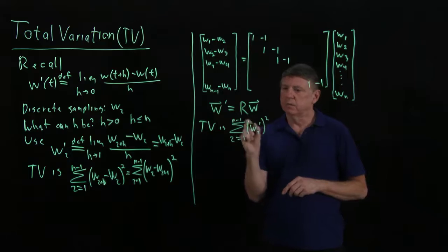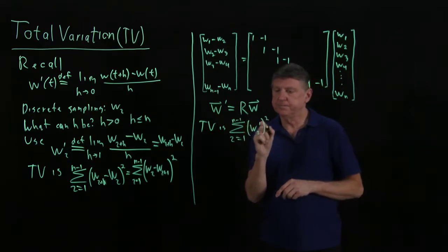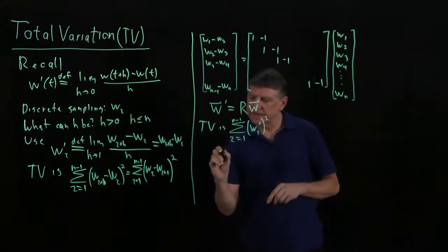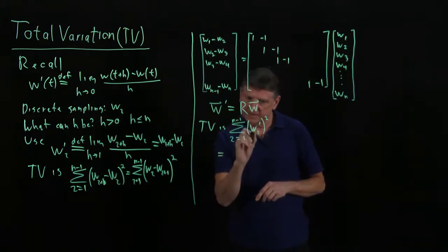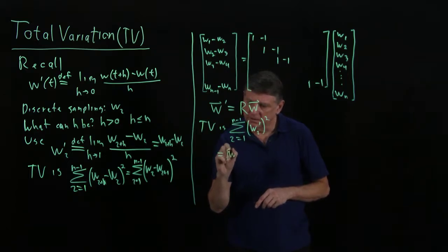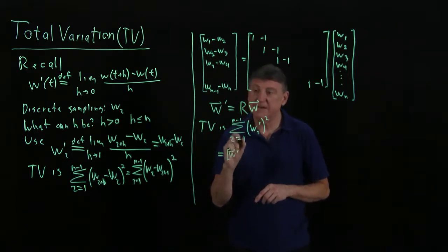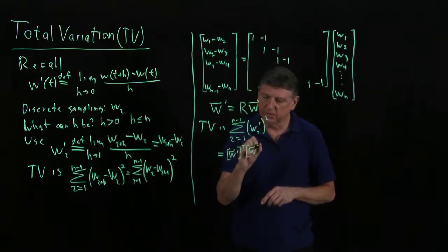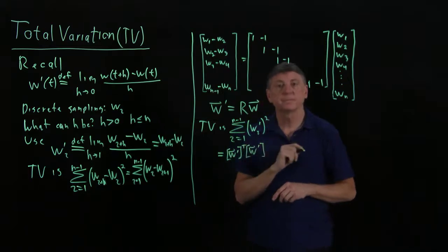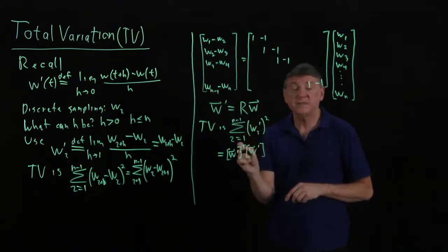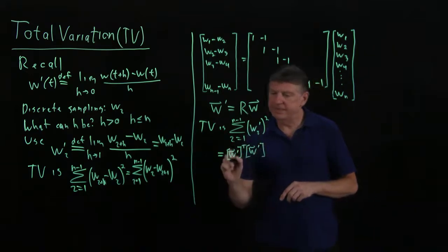And I can then write this entire term as, so that is equivalent to saying that I'm taking my w prime vector and transposing it and multiplying it by the w prime vector. That is, that's the sum of the squares always equals this.